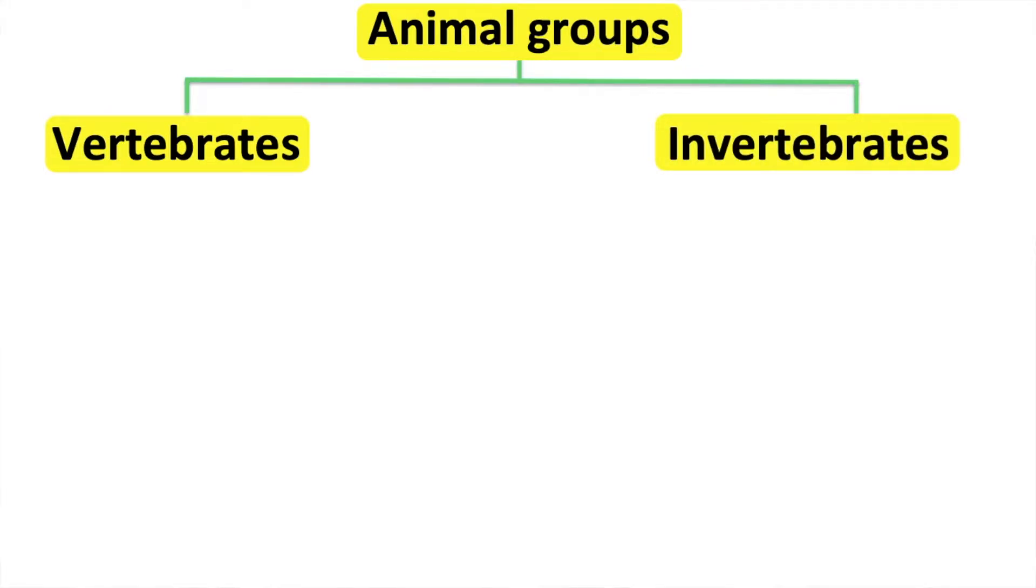In this video, we will look at the animal group. Animals can either be vertebrates or invertebrates. Vertebrates are animals that have a backbone. Invertebrates are animals that don't have a backbone.